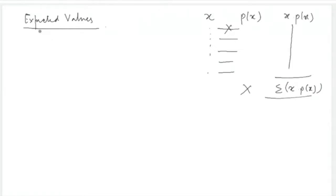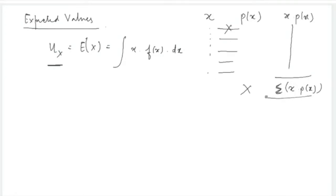For a continuous random variable, the expected value E[X] is the integral of x·f(x) from minus infinity to infinity. The fundamental logic is the same as the discrete case — you take the product of each value with its probability — but here you integrate instead of summing, because you have a smooth function rather than distinct values.